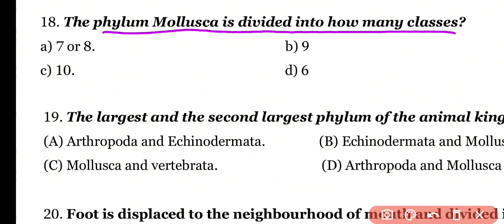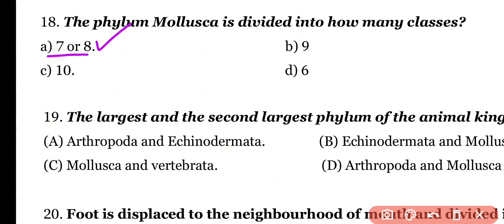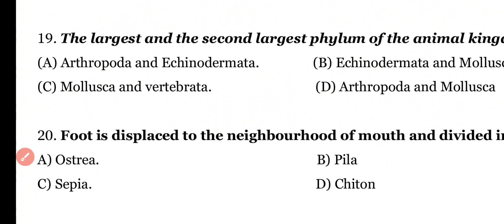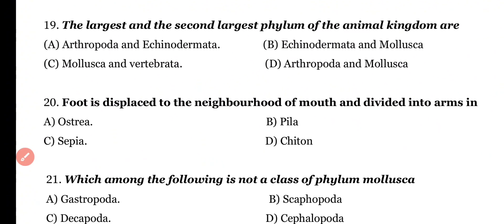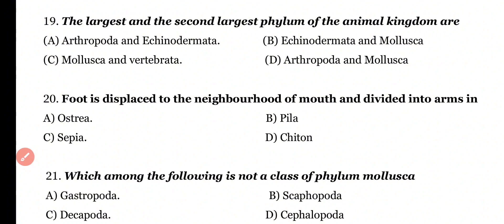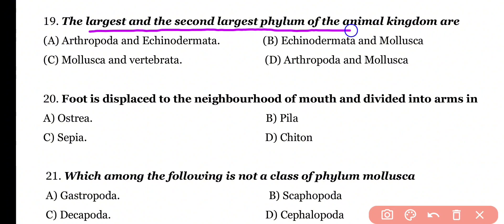Question number 18: Phylum Mollusca is divided into how many classes? Options: 7 or 8, 9, 10, 6. Correct answer is option A. Phylum Mollusca is divided into 7 or 8 taxonomic classes, and two of these classes are extinct.